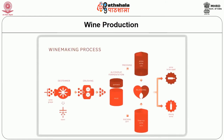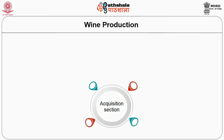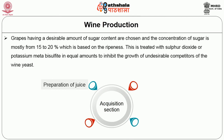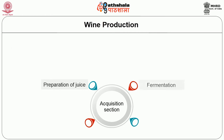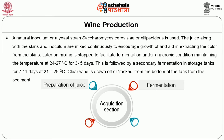The manufacturing process of red wine is a good example of the winemaking process. The first step is preparation of juice: grapes having a desirable sugar content are chosen, with sugar concentration mostly from 15 to 20% based on ripeness. This is treated with sulphur dioxide or potassium metabisulphite to inhibit the growth of undesirable competitors of the wine yeast. The second step is fermentation: a natural inoculum or yeast strain Saccharomyces cerevisiae var. ellipsoideus is used. The juice along with the skins and inoculum are mixed continuously to encourage yeast growth and aid in extracting colour from the skins.